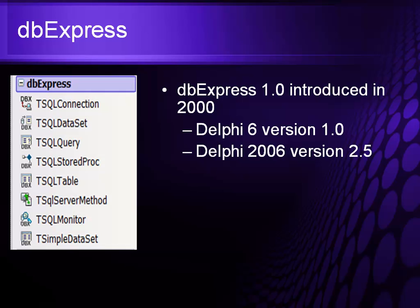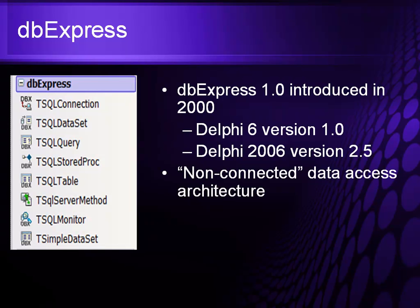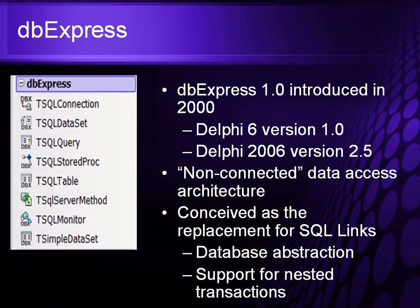DBExpress was introduced in Delphi 6 back in 2000 and has been updated continually through 2006 with version 2.5. It was basically the first non-connected data access architecture, meaning you connect, do some work, receive information back, and then disconnect. It was conceived as a replacement for the SQL Links technology found with the BDE. It has a high level of database abstraction, so you can switch from one database to another with very little overhead. It also supports nested transactions, as long as the underlying database supports them.